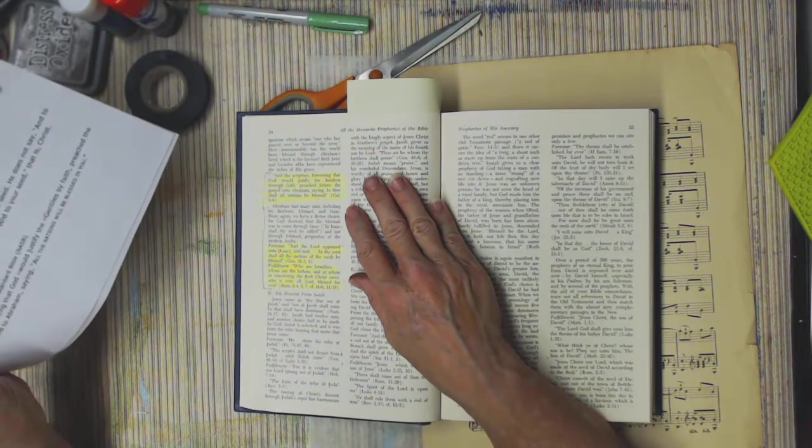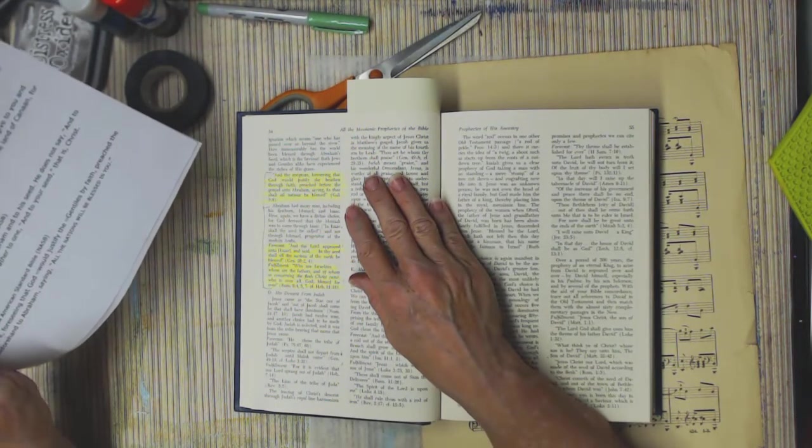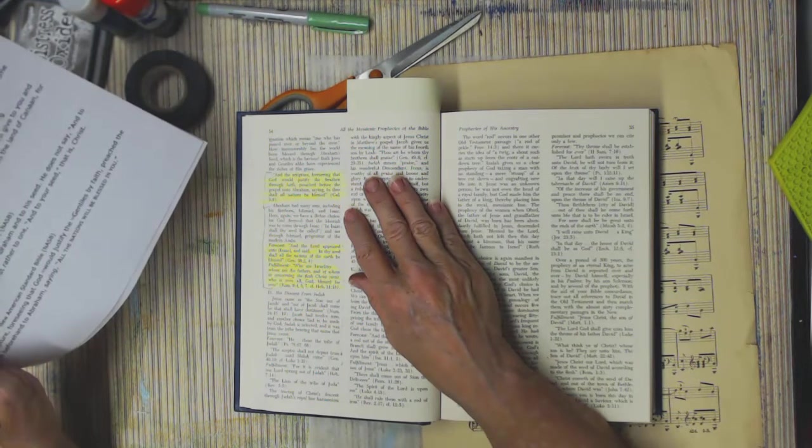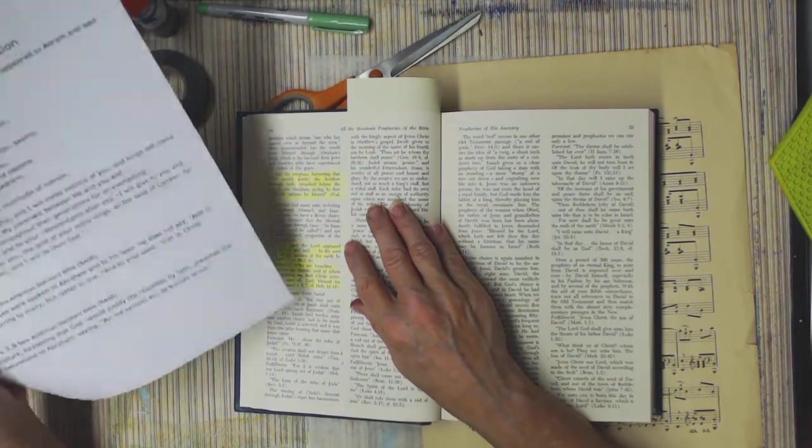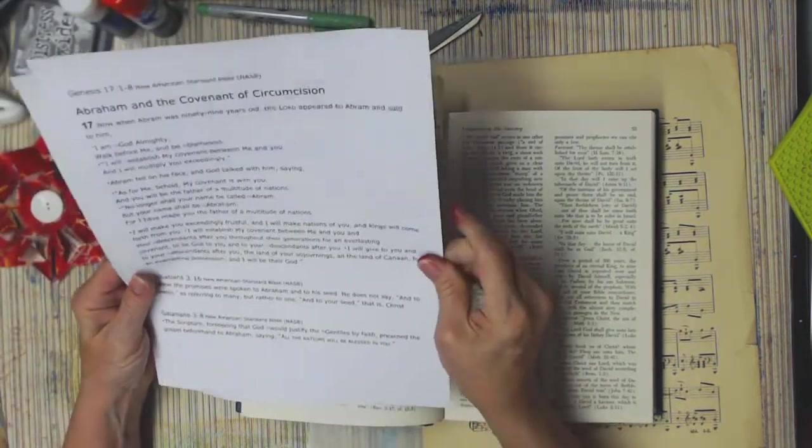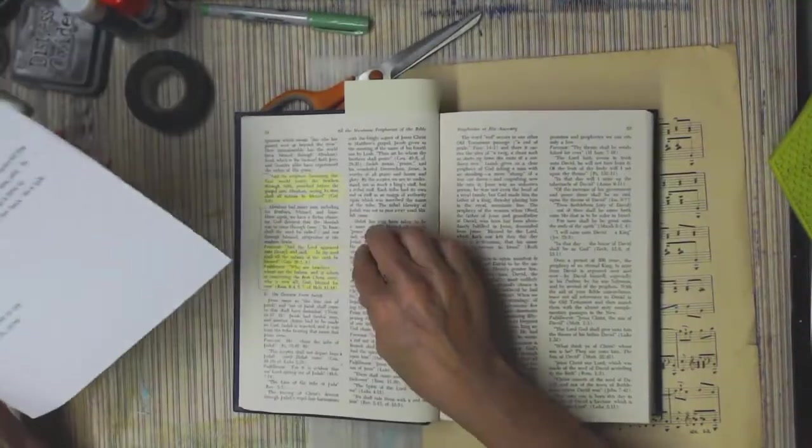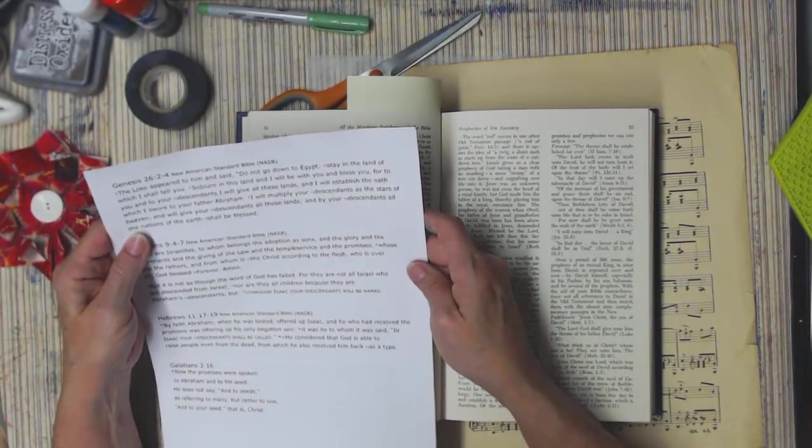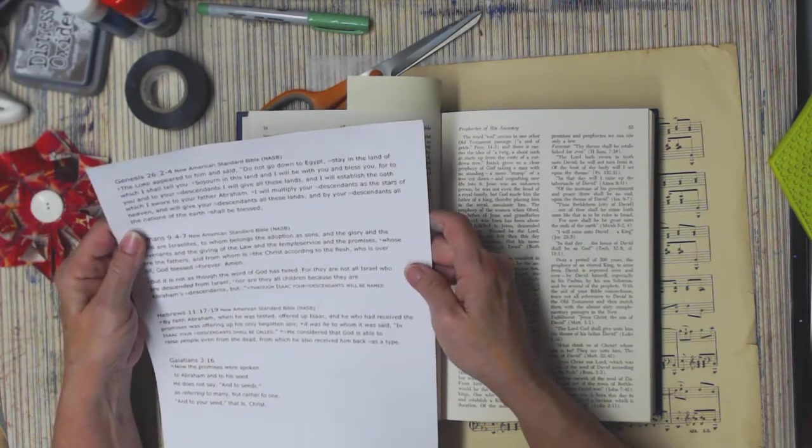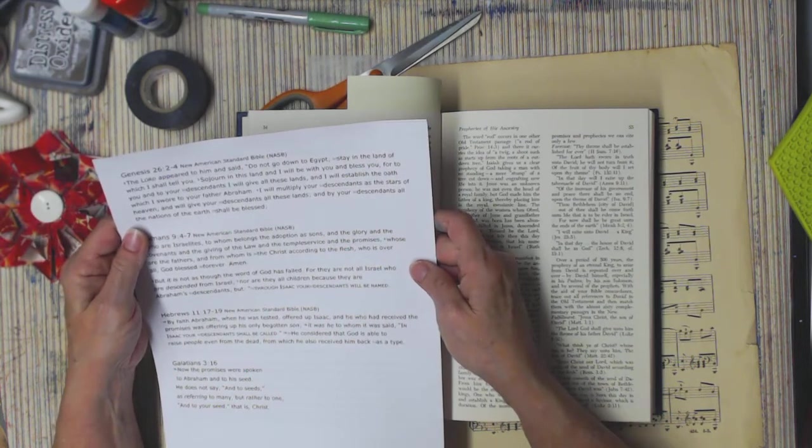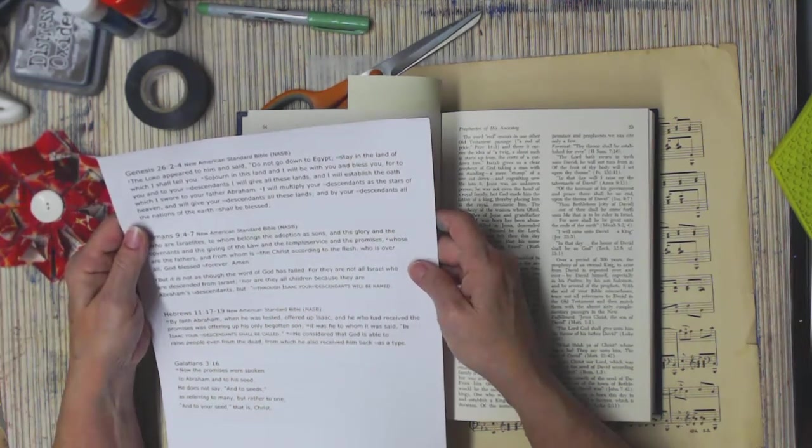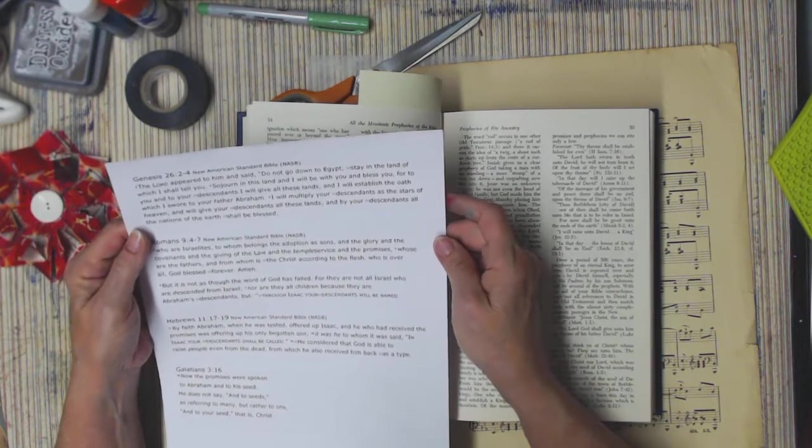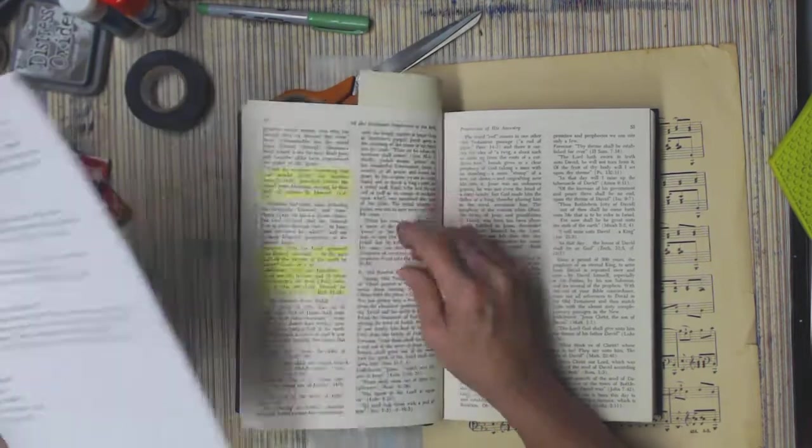Abraham had many sons, including his firstborn Ishmael and Isaac. And here again, we have a divine choice. For God decreed that the Messiah was to come through Isaac. In Isaac, thy seed shall be called. And the forecast of that, this is Genesis 26, 2-4. And the Lord appeared to him and said, Do not go down to Egypt. Stay in the land which I shall tell you. Sojourn in this land, and I will be with you and bless you. For to you and to your descendants I will give these lands. And I will establish the oath I swore to your father Abraham. I will multiply your descendants as the stars of the heaven. And will give your descendants these lands. And by your descendants all the nations of the earth shall be blessed. And he's talking to Isaac there.